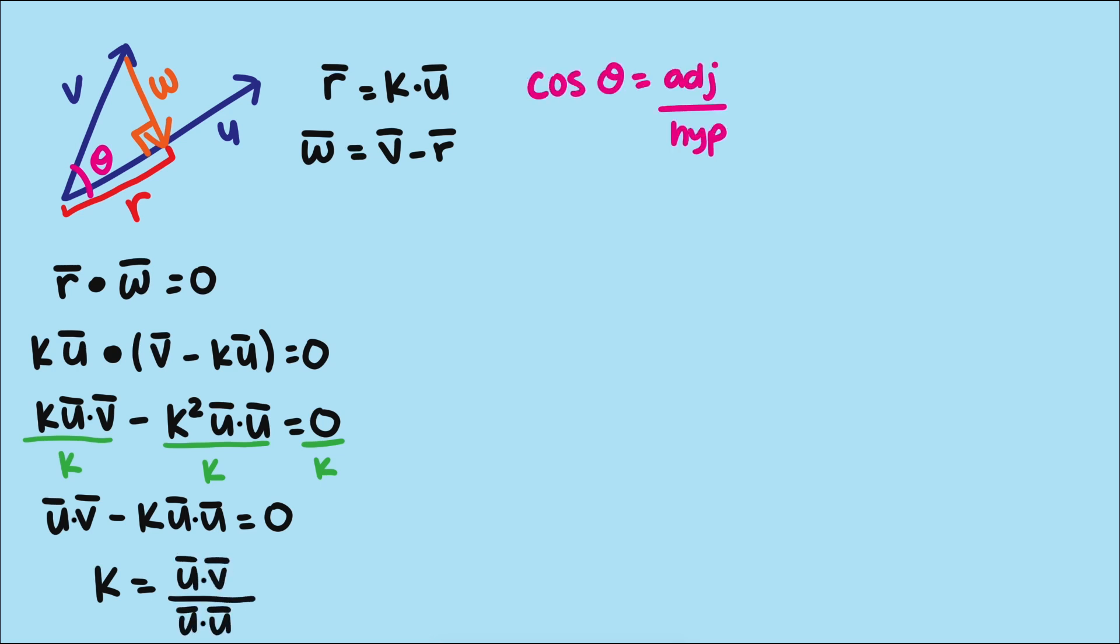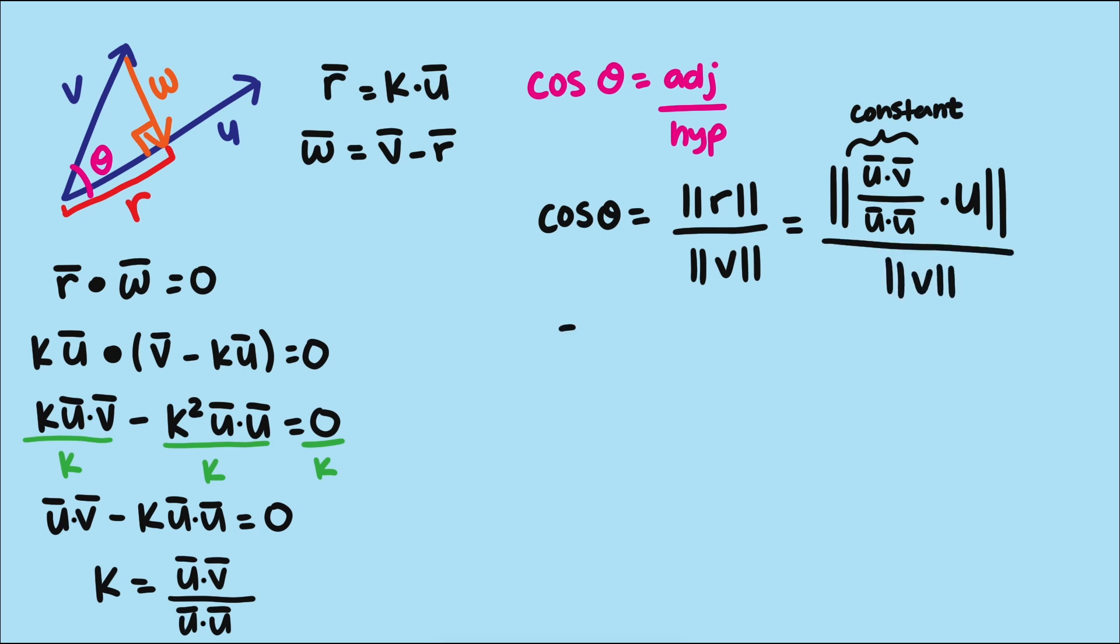Lastly, with our scalar k for vector u, we can plug everything into our cosine formula and simplify. Since this value here is just a constant, we can pull it out, leaving us with this expression.